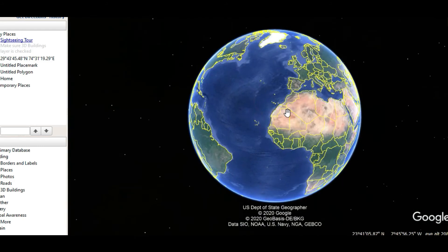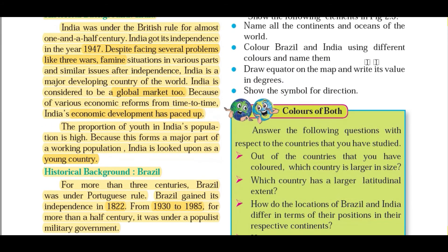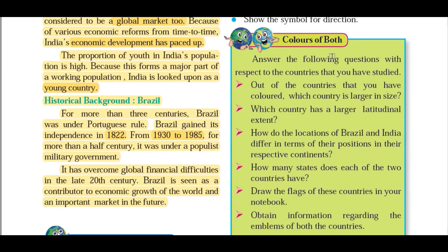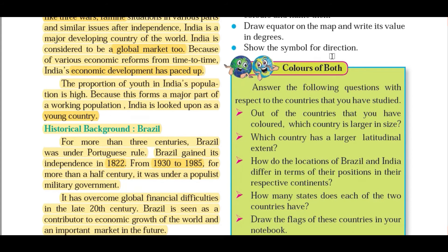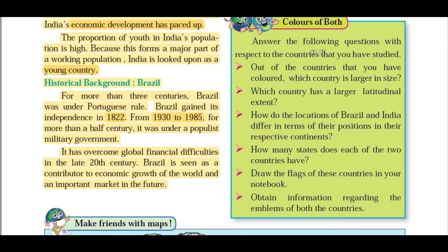We have discussed the continents and oceans of the world. The next question is to color Brazil and India in different colors and name them, draw the equator and write its value in degrees, and show the symbol for direction — very basic tasks. Now, out of the two countries colored, which country is larger in size? Definitely Brazil is larger than India. Brazil is the fifth largest country in the world and its population is also fifth largest.